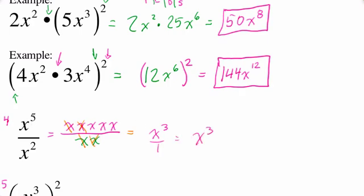So returning to the original problem, I have a 5 in the numerator exponent and a 2 in the denominator exponent. Where did the 3 come from? That was 5 minus 2. So when you have x to the fifth over x squared, it's just x to the 5 minus 2, which is x cubed.